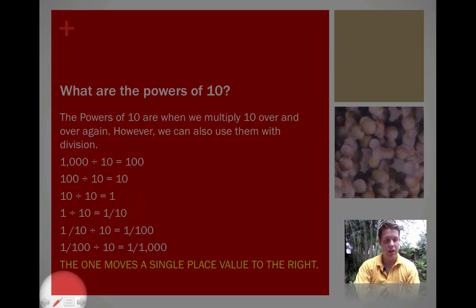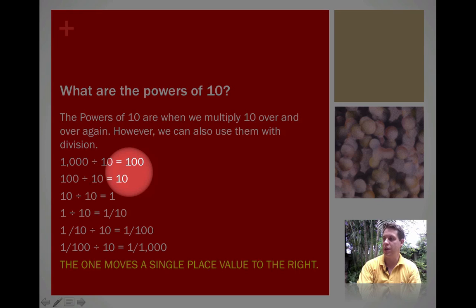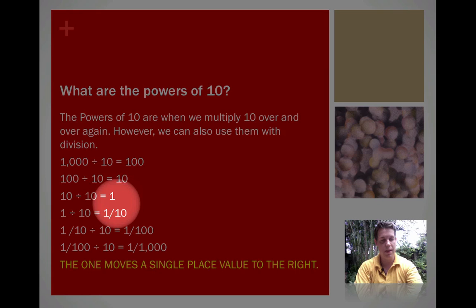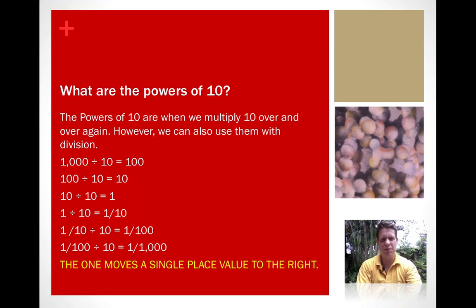Also, the zero moves a single place value to the right. So this time, the 1 starts in the hundreds place. When we divide, it moves a single place value to the right, so now it's in the tens place. And it moves a single place value again when we divide by 10 to the ones place. And that's really the same thing that was happening with the multiplication video, except now we're going backwards.